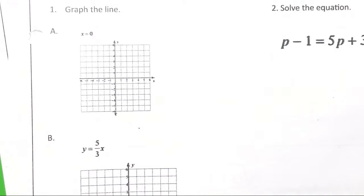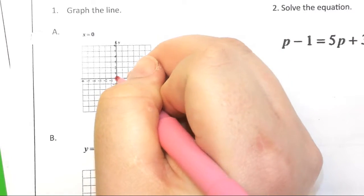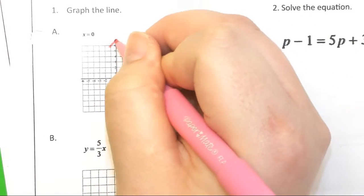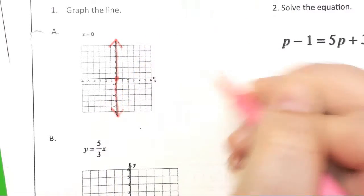Okay, well, x equals 0 happens at the... I mean, there's 0 there, so it is the y-axis. She is correct. It's really the y-axis.